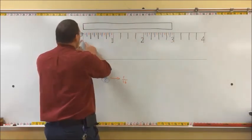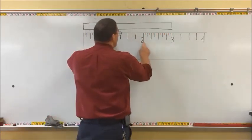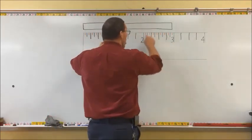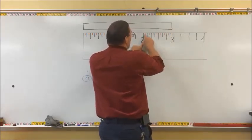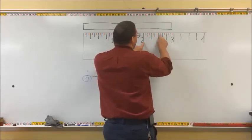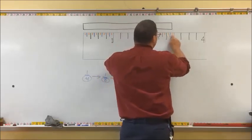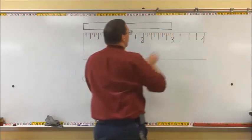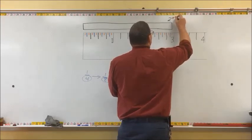So this piece of wood is, from here: zero, one, two inches long - but not just two inches, it's a little longer. Two and one-sixteenth, two-sixteenths, three-sixteenths, four-sixteenths, five, six, seven, eight, nine, ten, eleven, twelve, thirteen, fourteen, fifteen-sixteenths. And so this piece of wood is two and fifteen-sixteenths of an inch.